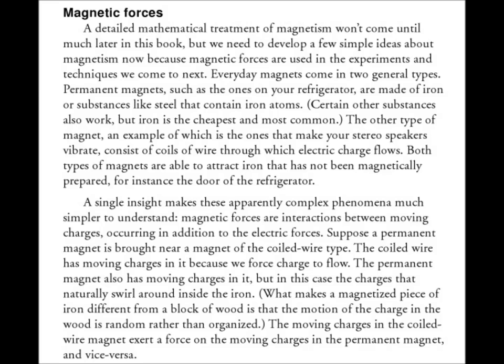A single insight makes these apparently complex phenomena much simpler to understand. Magnetic forces are interactions between moving charges, occurring in addition to the electrical forces. Suppose a permanent magnet is brought near a magnet of the coiled wire type. The coiled wire has moving charges in it because we force charge to flow. The permanent magnet also has moving charges in it, but in this case the charges that naturally swirl around inside the iron.